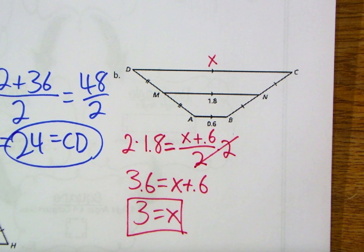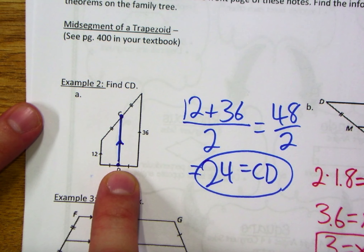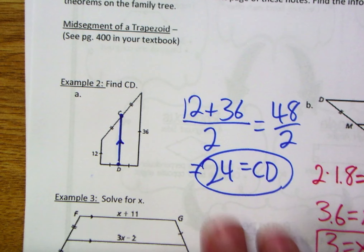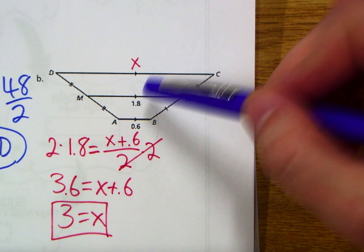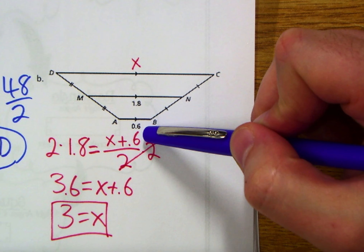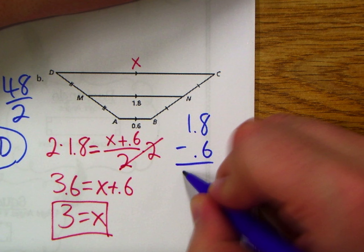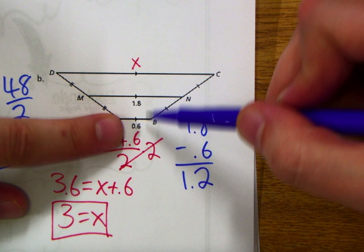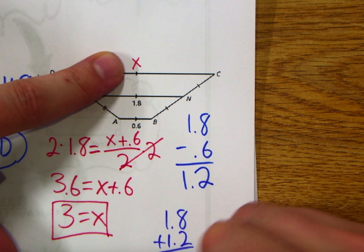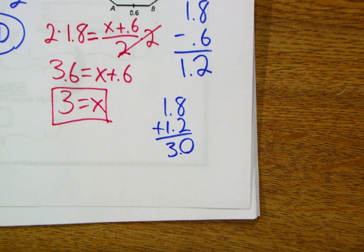Here's a mental math approach to check: 0.6 is 1.2 less than 1.8. So adding 1.2 to 1.8 gives 3.0. Either way it checks out. You have a couple of different approaches — it comes down to how you see the problem.